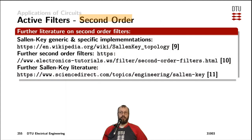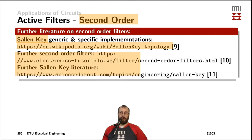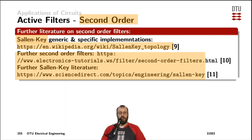Active filters can also be built as second-order and higher-order filters. A very specific and generic kind of second-order active filter is the so-called Sallen-Key filter, which is described on Wikipedia with further links to explore. In some Sallen-Key filter implementations, the non-inverting part of the amplifier uses two resistors to adjust the DC gain, while the generic impedances Z1, Z2, Z3, and Z4 can be configured with resistors and capacitors to achieve high-pass, low-pass, band-pass, or band-stop behavior.